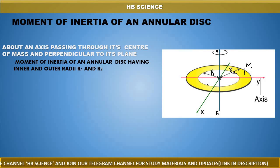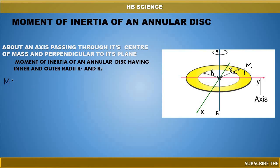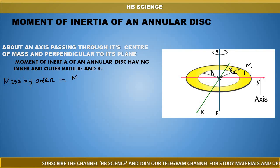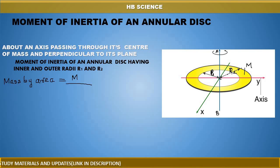I will find it. If the mass is uniformly distributed, we can find it by integrating the mass element. Let's go for mass by unit area. Mass by area is equal to: the mass capital M divided by the area — which means outer area minus inner area. Outer circle area is π·R2² minus π·r1².